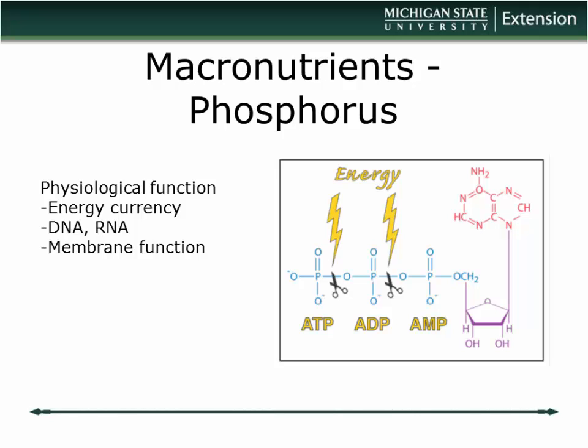Let's go through what these nutrients are doing in the plant and what happens when there's not enough. Phosphorus is a critical element in plant physiology. If you recall things like the Krebs cycle from high school or college biology — those energy-rich compounds like ATP and ADP running around — the 'P' in those stands for phosphorus. So phosphorus is critical for many energetic reactions in both respiration and photosynthesis.